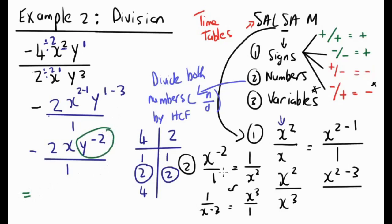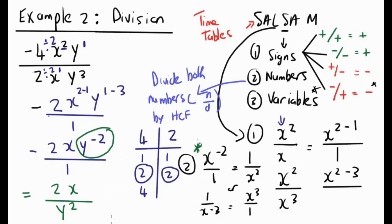For the final answer I don't want a negative exponent, so using Law 2, the 2x stays on top and y moves to the denominator, becoming y to the power of 2. So the final answer is 2x over y squared. That completes Example 2 and we're ready to try some questions.